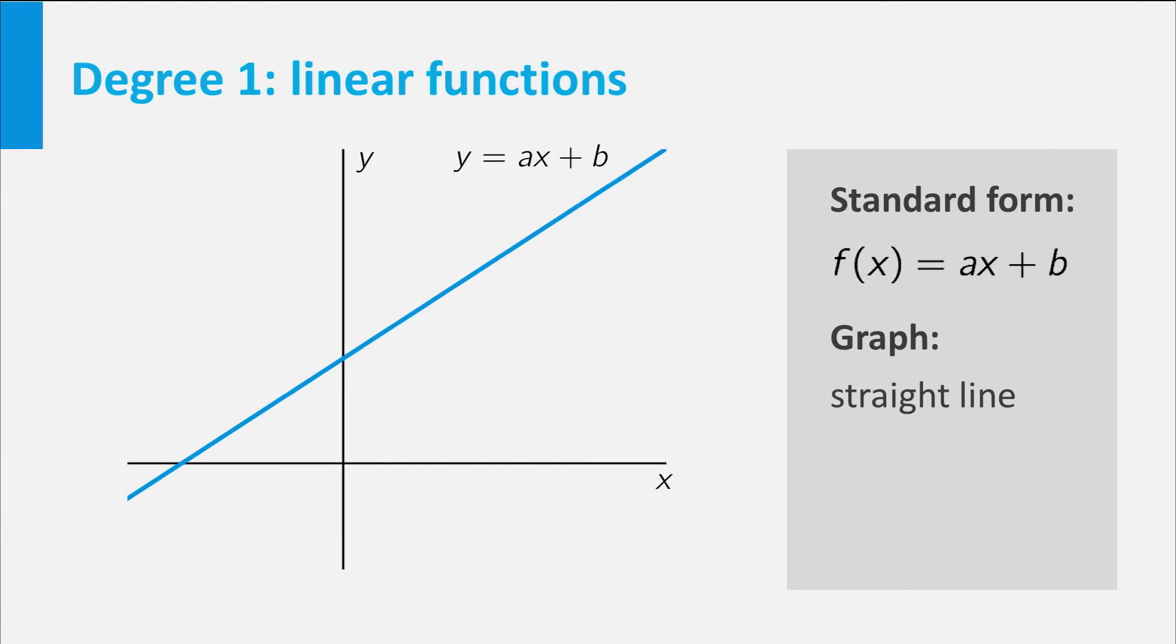If you consider the graph, the coefficients a and b actually have a meaning. a represents the increase of the function value if x increases by 1. As such, it is a measure for the steepness of the graph, called the slope. b is precisely the height of the intersection point of the graph and the vertical axis. It is called the y-intercept.